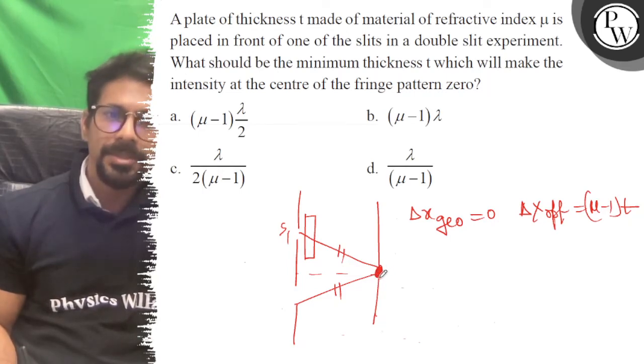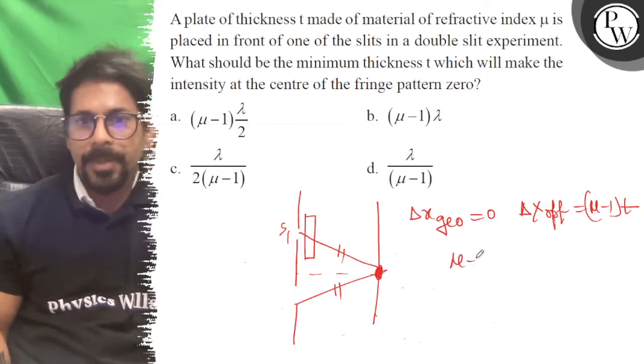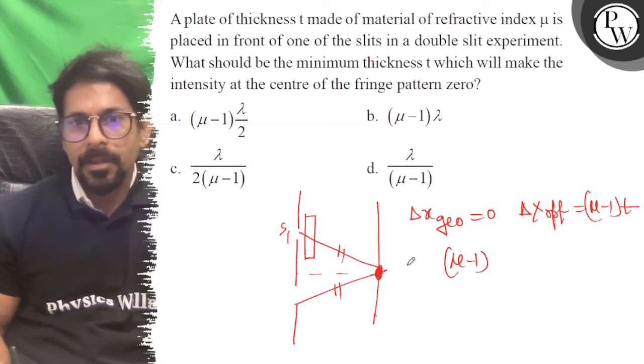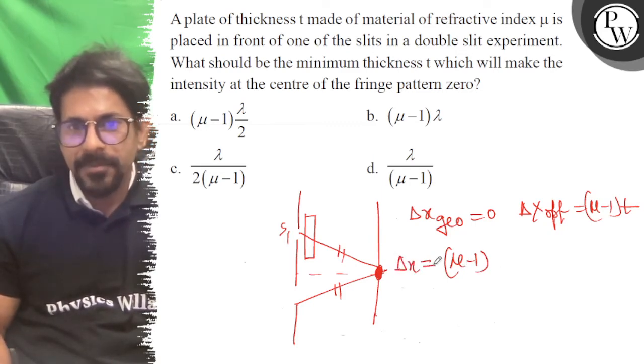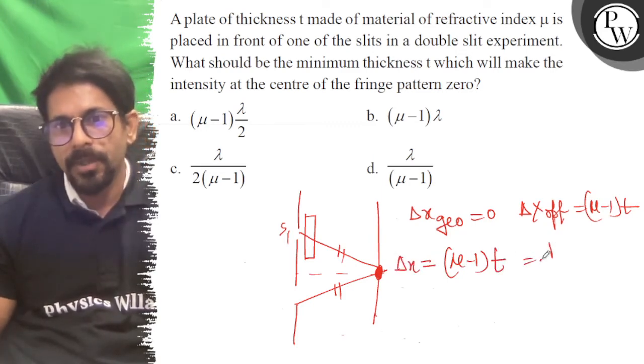So we want the path difference, that is Δx path difference, (μ - 1) into t, that should be equal to λ by 2.